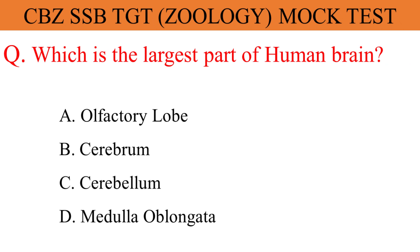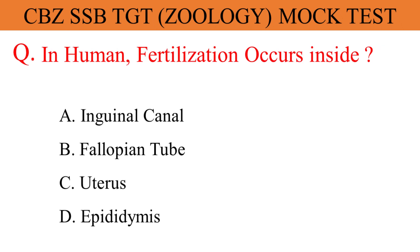Which is the largest part of the human brain? The correct answer is option B. Cerebrum. In humans, fertilization occurs inside — and the correct answer is option B. Fallopian tube.